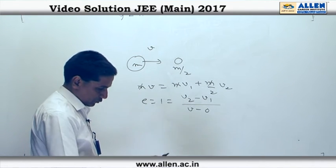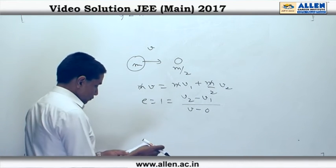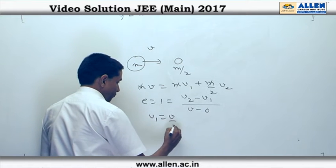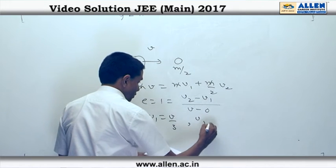Solving them we get v₁ = v/3 and v₂ = 4v/3.